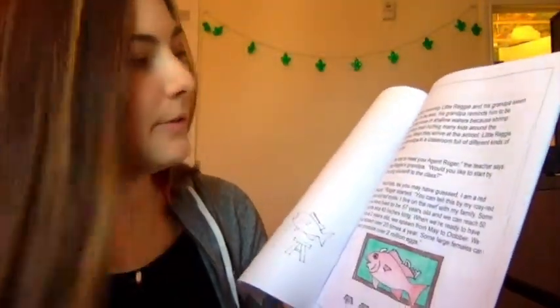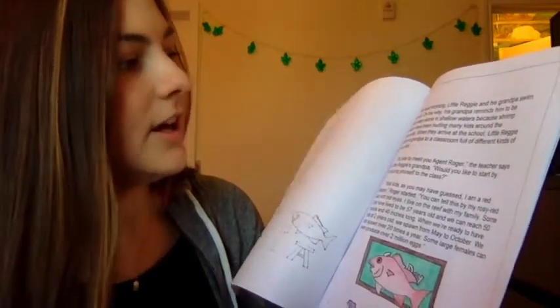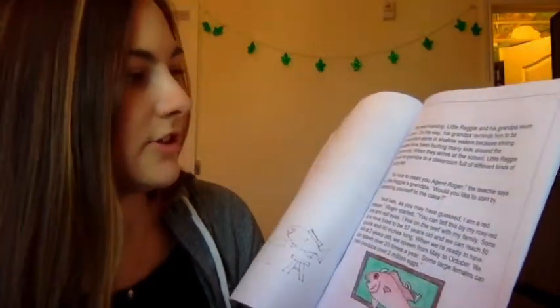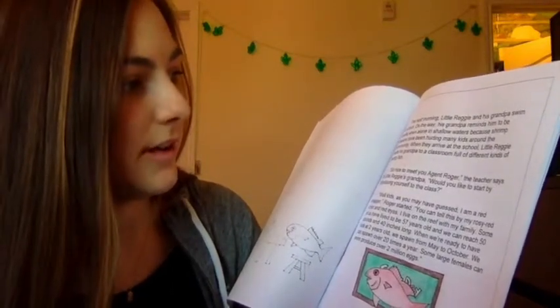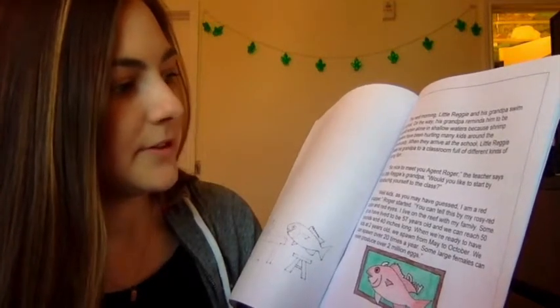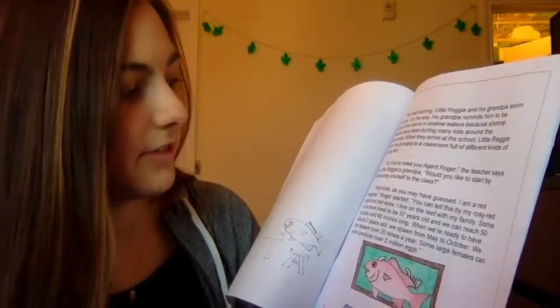The next morning, little Reggie and his grandpa swim to school. On the way, his grandpa reminds him to be careful when alone in shallow waters because shrimp trawlers have been hurting many kids around the community. When they arrive at the school, little Reggie leads his grandpa to a classroom full of different kinds of young fish.